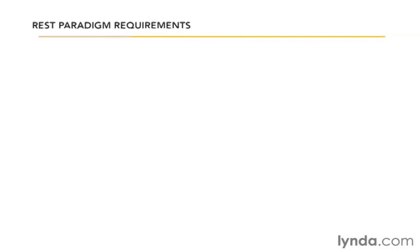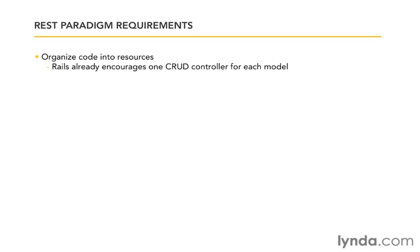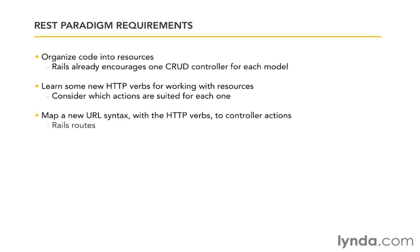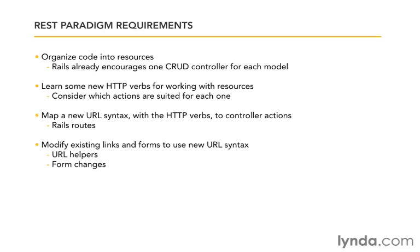Let's start by looking at the big picture. First, we need to organize our code into resources, and Rails already encouraged us to do this — we have one CRUD controller for each of our models. Next, we need to learn some new HTTP verbs for working with these resources. The HTTP spec gives us methods we can use to talk to our resources. Then we'll map a new URL syntax using those HTTP verbs to our existing controller actions using Rails routes. And last, we'll modify our existing links and forms to use this new URL syntax.